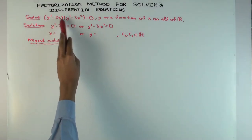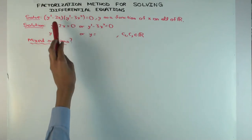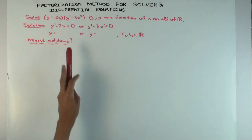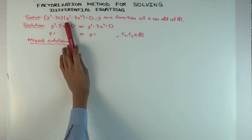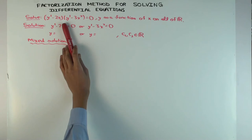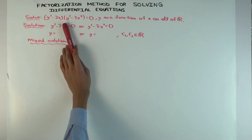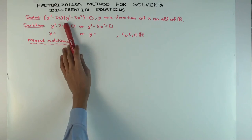What kind of differential equation is it? What's the order and what's the degree? The order is 1 and the degree is 2. It's a first order second degree differential equation, and I've already written it in factored form.